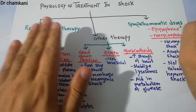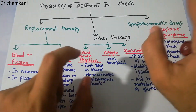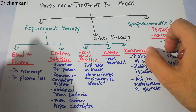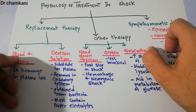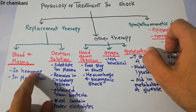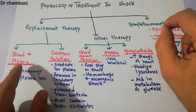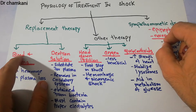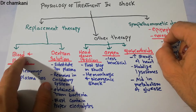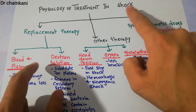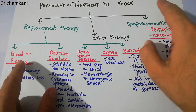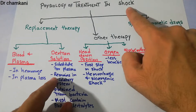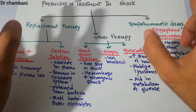If blood is lost, we replace blood. If plasma is lost, we replace plasma. If fluid is lost, we replace fluids. So in the replacement therapy, we have options like blood and plasma. If it's a hypovolemic shock due to hemorrhage — which is basically a hemorrhagic shock — then ideally we should replace this with whole blood. And if there is loss of plasma, then we should replace the plasma to correct the shock.